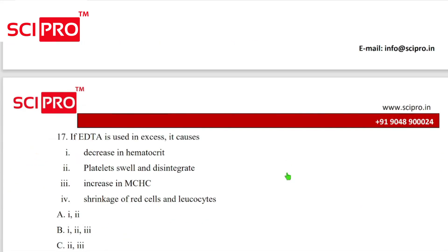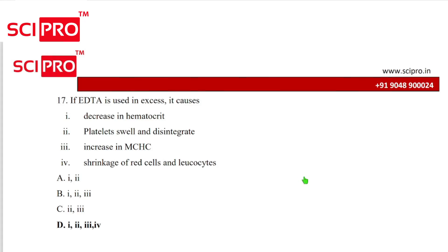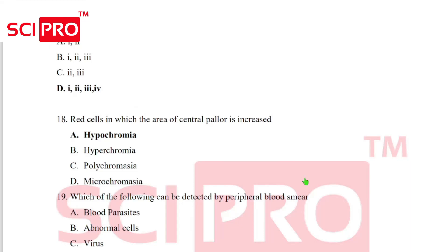Question number 17, if EDTA is used in excess, it causes all of them. Decrease in hematocrit, platelet swell and disintegrate, increase in MCHC, shrinkage of RBC and leukocytes. Question 18, red cells in which the area of center pallor is increased, hypochromia.